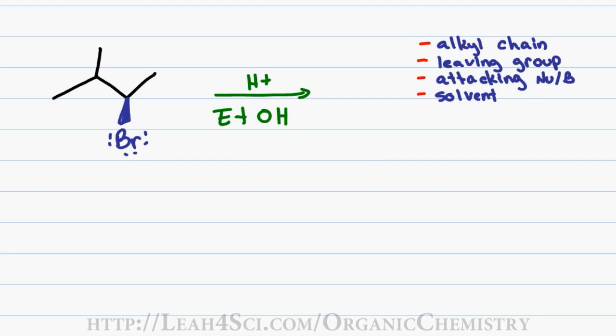Let's look at our checklist to analyze the reaction and verify that SN1 can take place. The alkyl chain, specifically the carbon holding the leaving group is a secondary carbon. While the secondary carbon can form a carbocation, this is actually a trick question because the secondary carbon is sitting directly near a tertiary carbon.